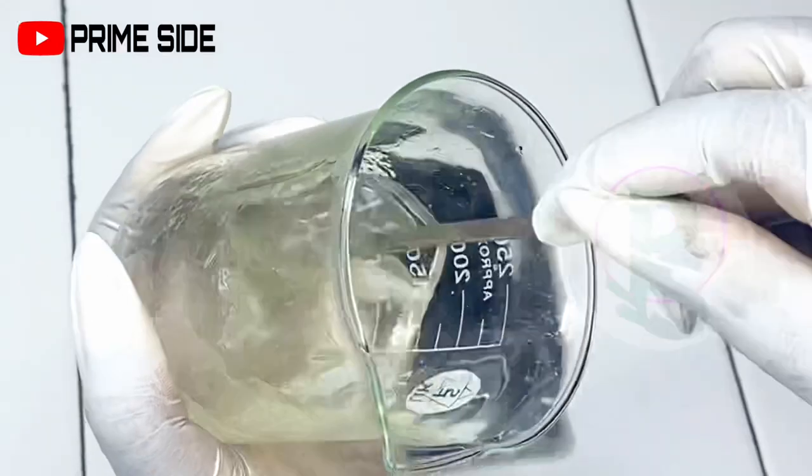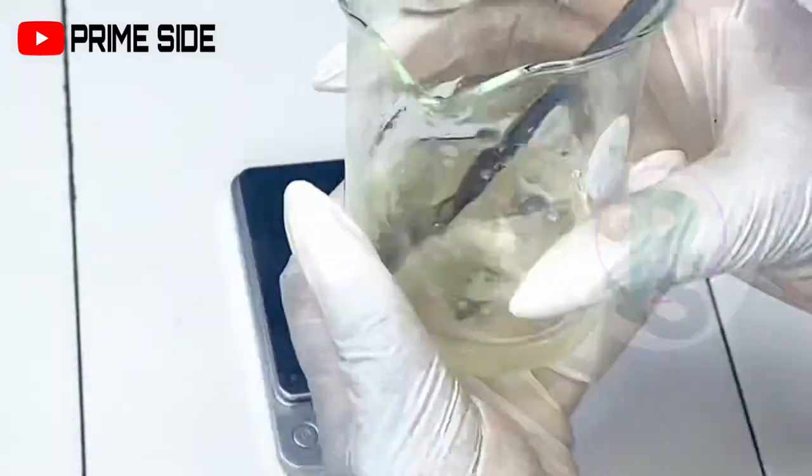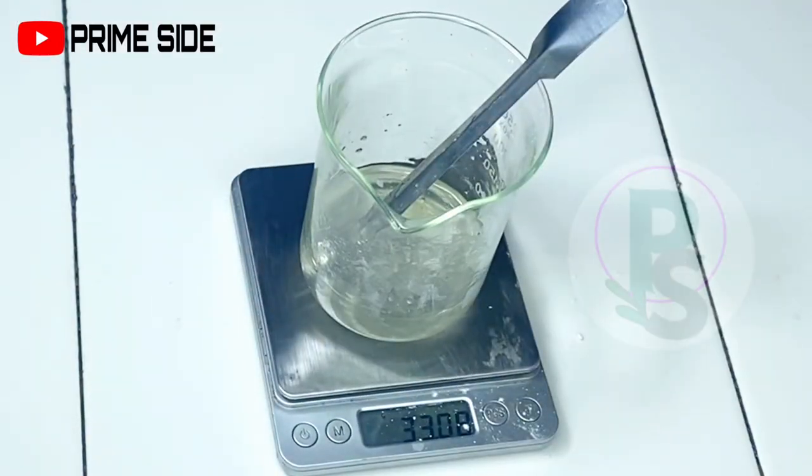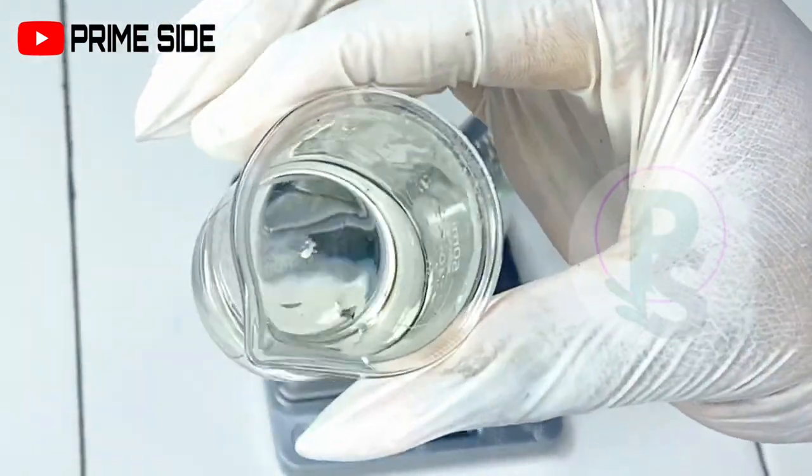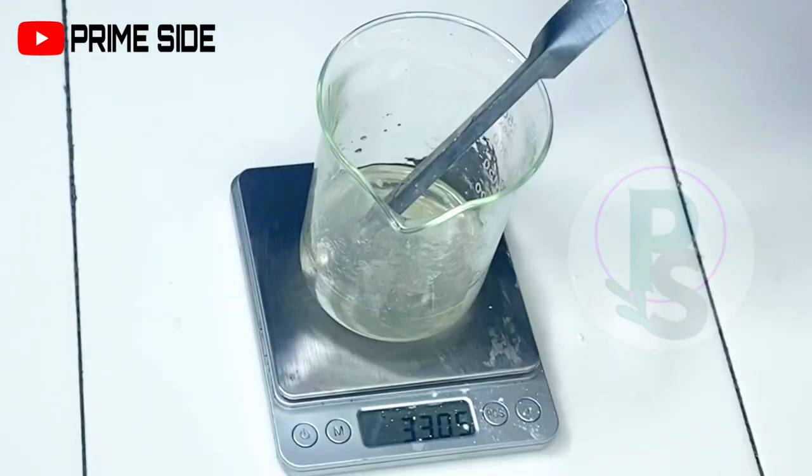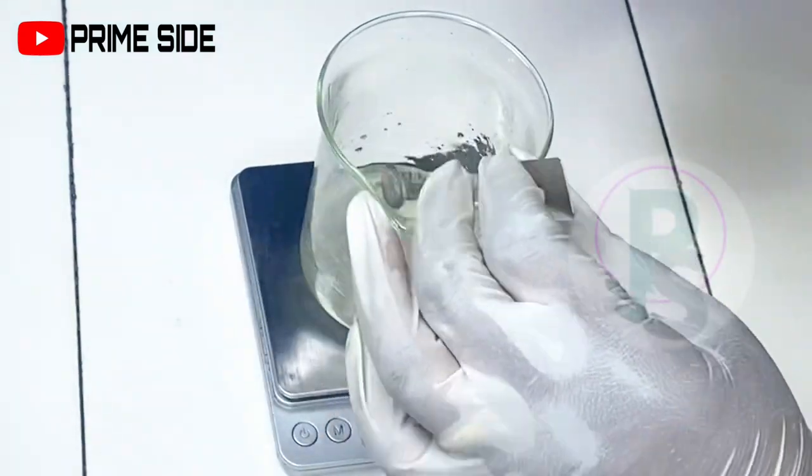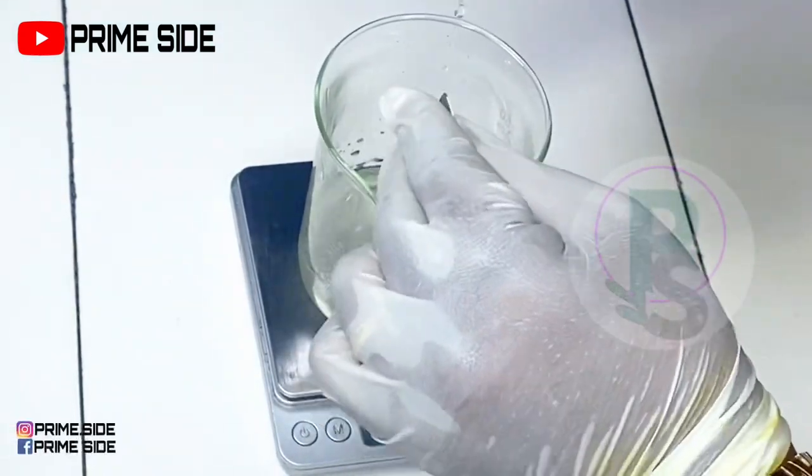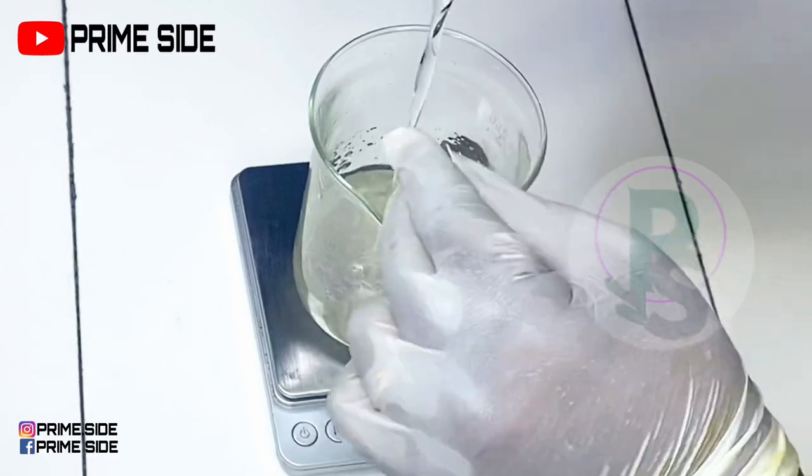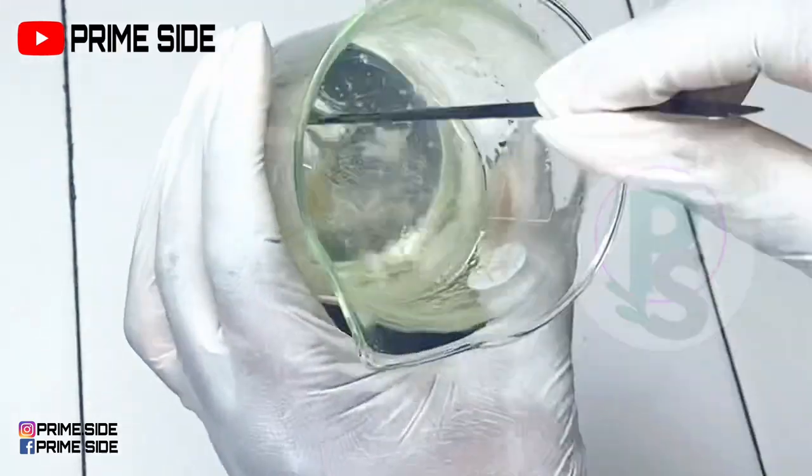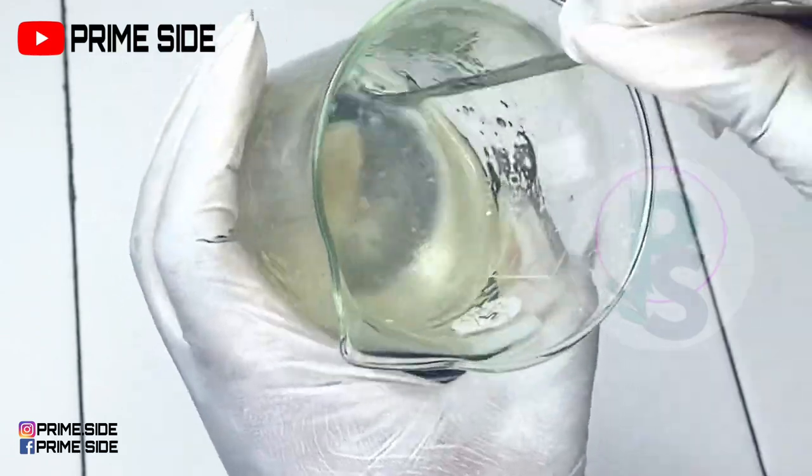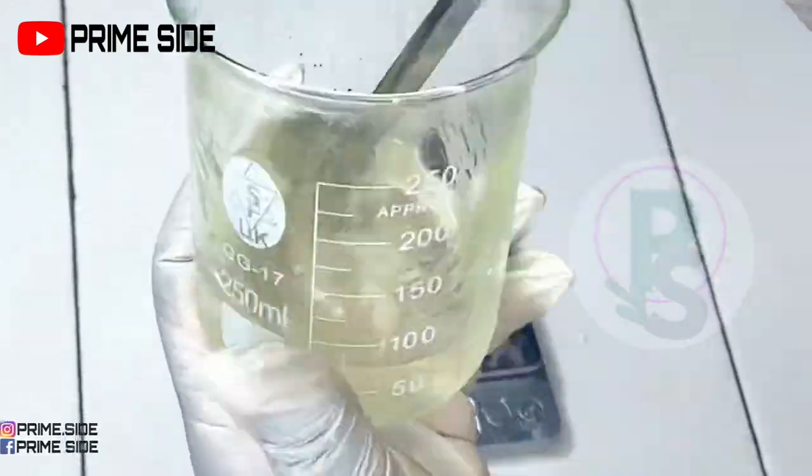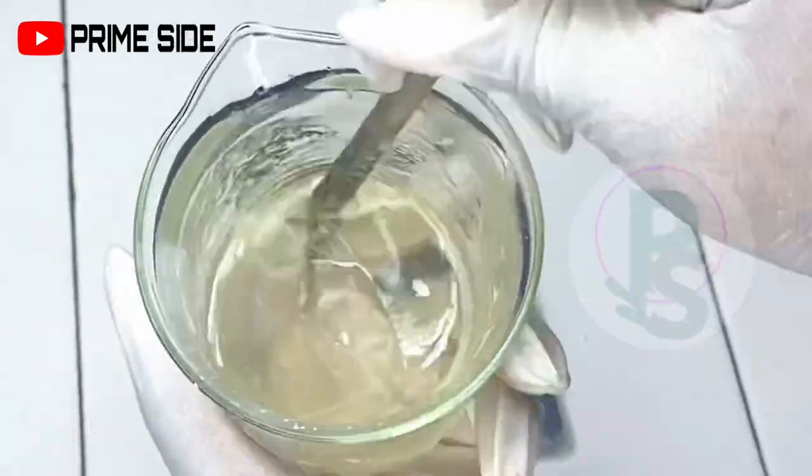I'll then go ahead to bring my azelaic acid, which is already fully dissolved in propylene glycol as you can see, and I'm just going to transfer this into the serum. As you do this, please make sure you're stirring at the same time. So just keep stirring until everything becomes uniform and all the ingredients are well combined.